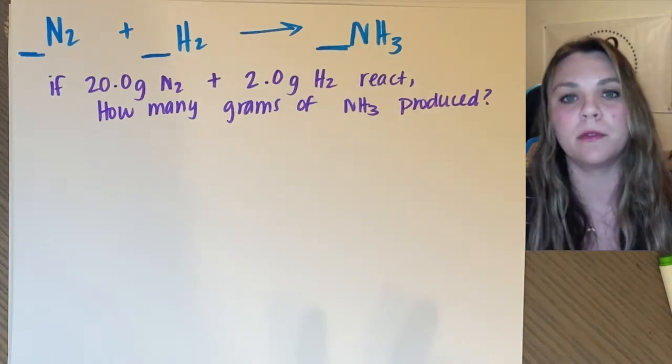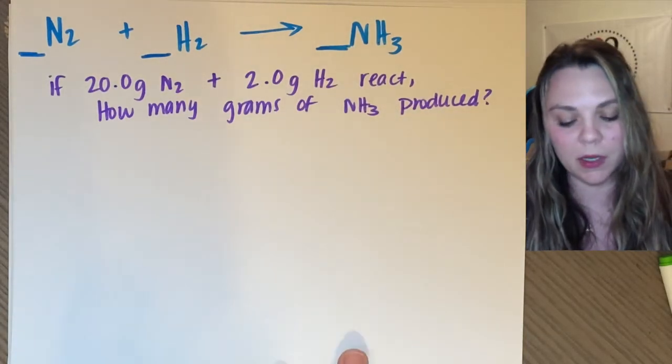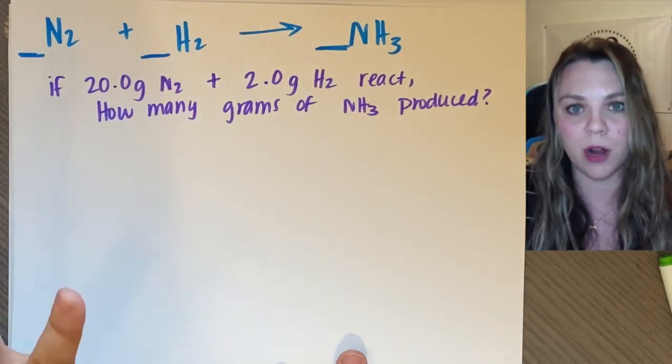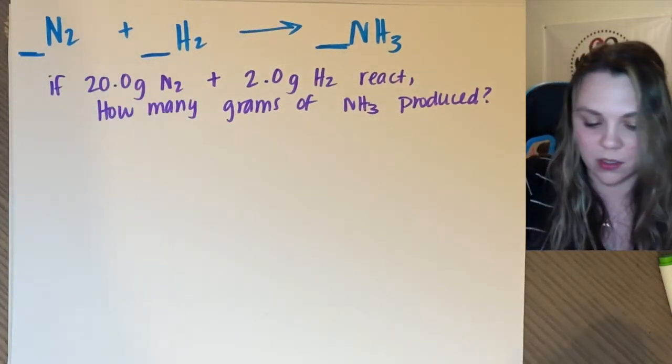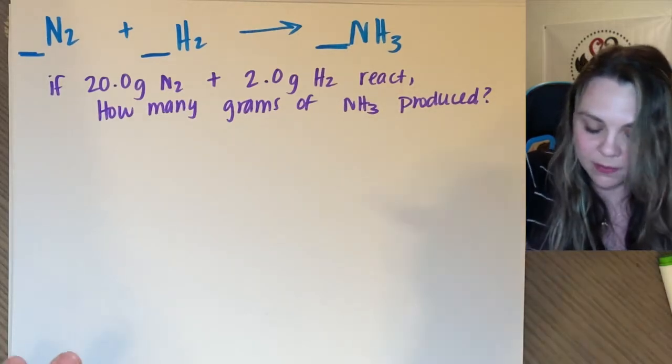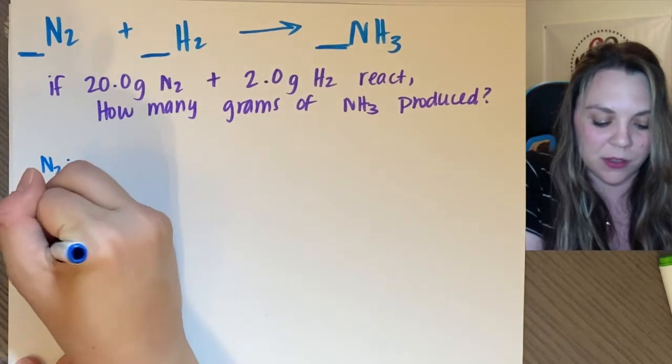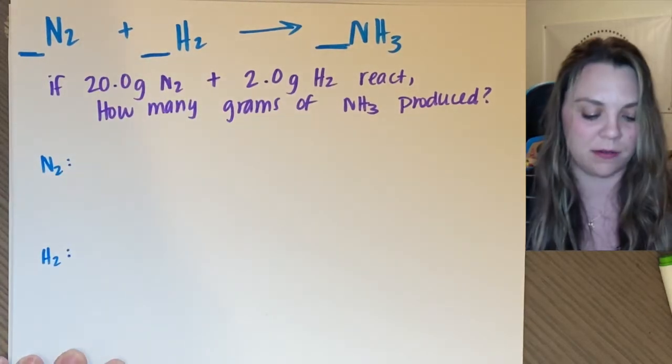So good rule of thumb for your limiting reactant problems is however many reactants there are is how many problems you're going to have to do. So I'm going to have to do a problem, a stoic problem for nitrogen. And I'm going to have to do a stoic problem for hydrogen. So two problems.